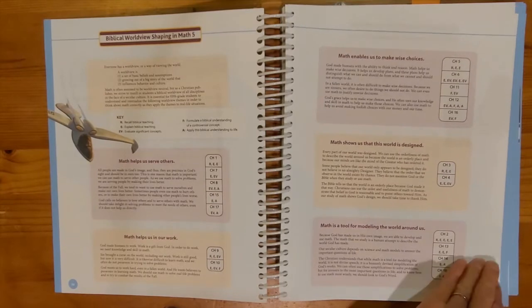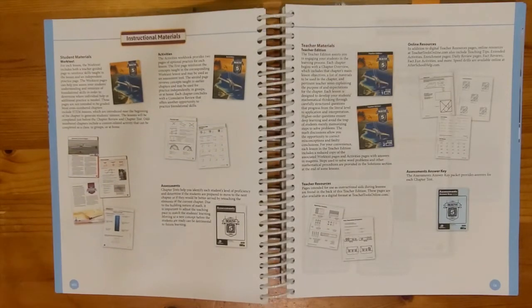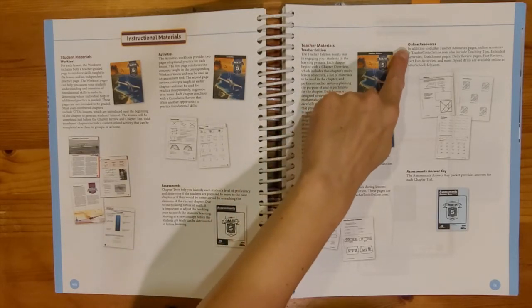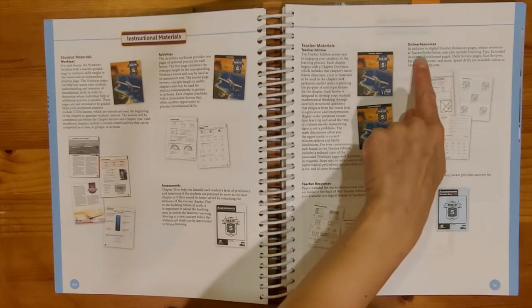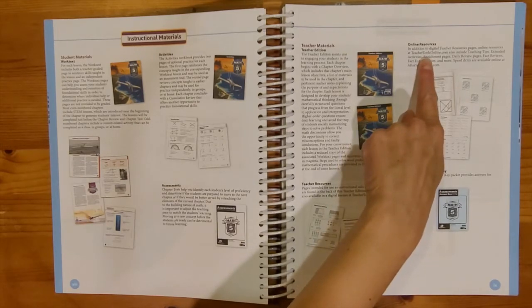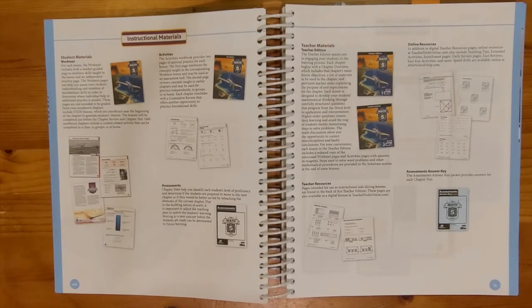The beginning of the book has some good information to read through as you are getting ready to teach this course. There's some information here about instructional materials. These are items that will come with your textbook kit, and I do want to make a note about these online resources. Periodically throughout this book you will see this link for teachertoolsonline.com. As a homeschool parent you will actually be going to the homeschool hub to find those extra resources.